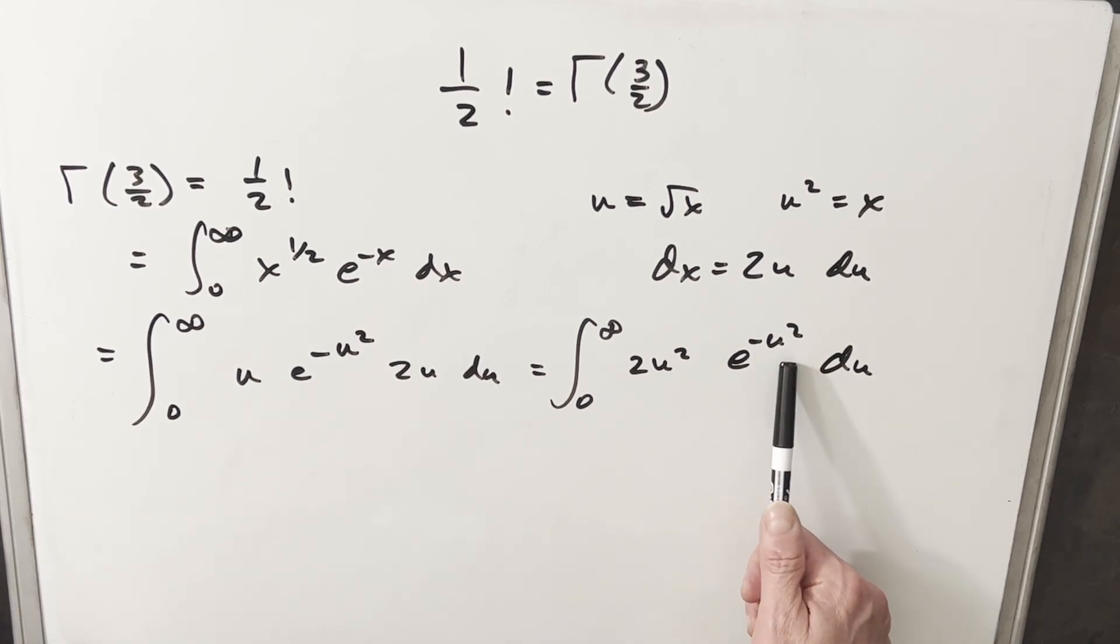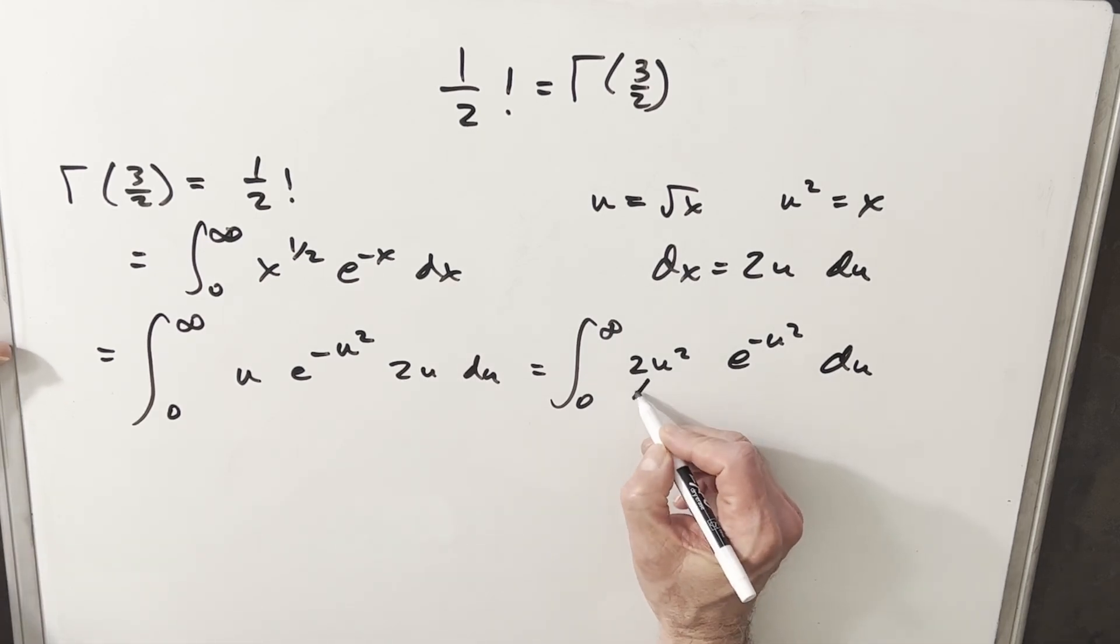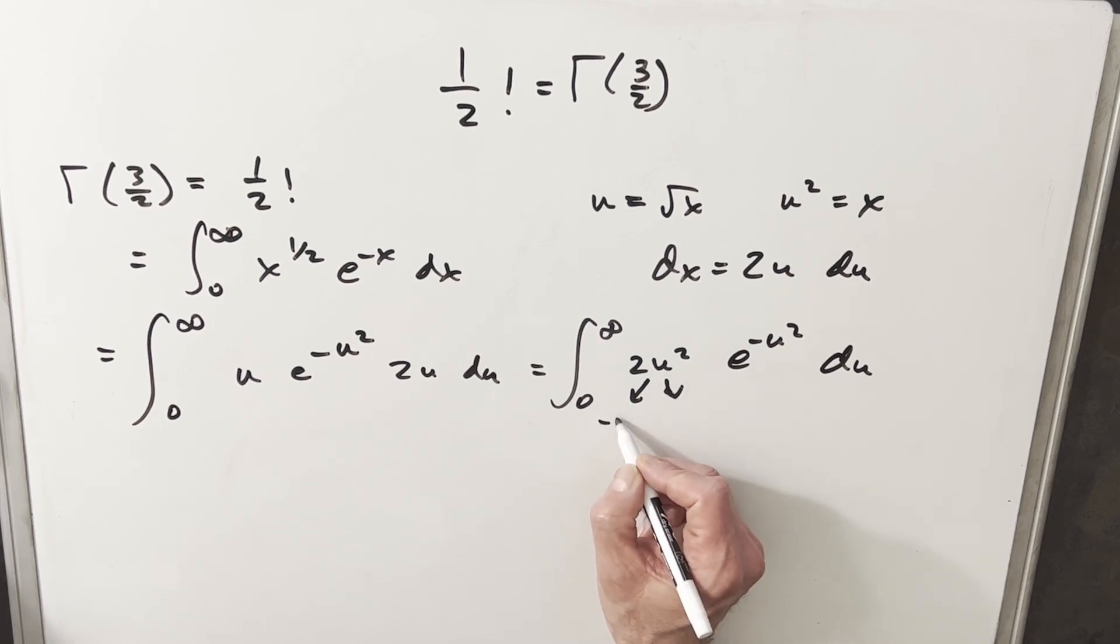At this point, the u squared exponent here is a little difficult to deal with. But what I can do is let's use integration by parts and see if we can clean this up. So I want to use integration by parts on this. But one thing I'm going to do is I'm just going to write 2u squared. We're going to break this up and write it as minus u times minus 2u.